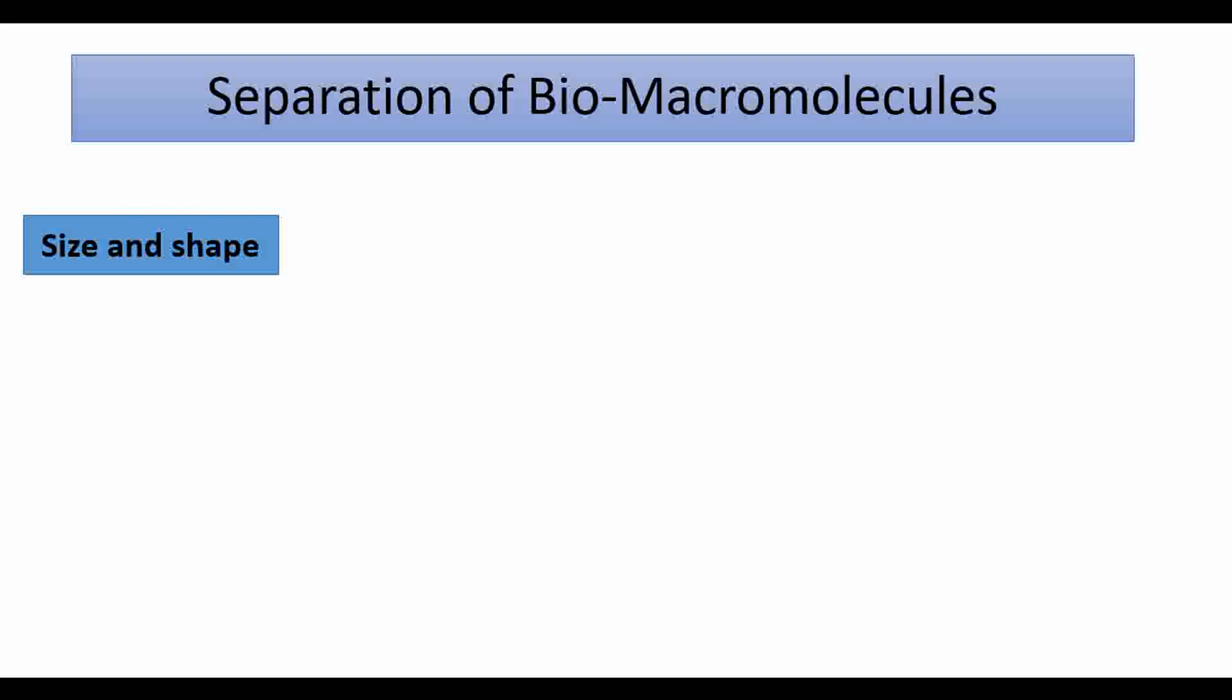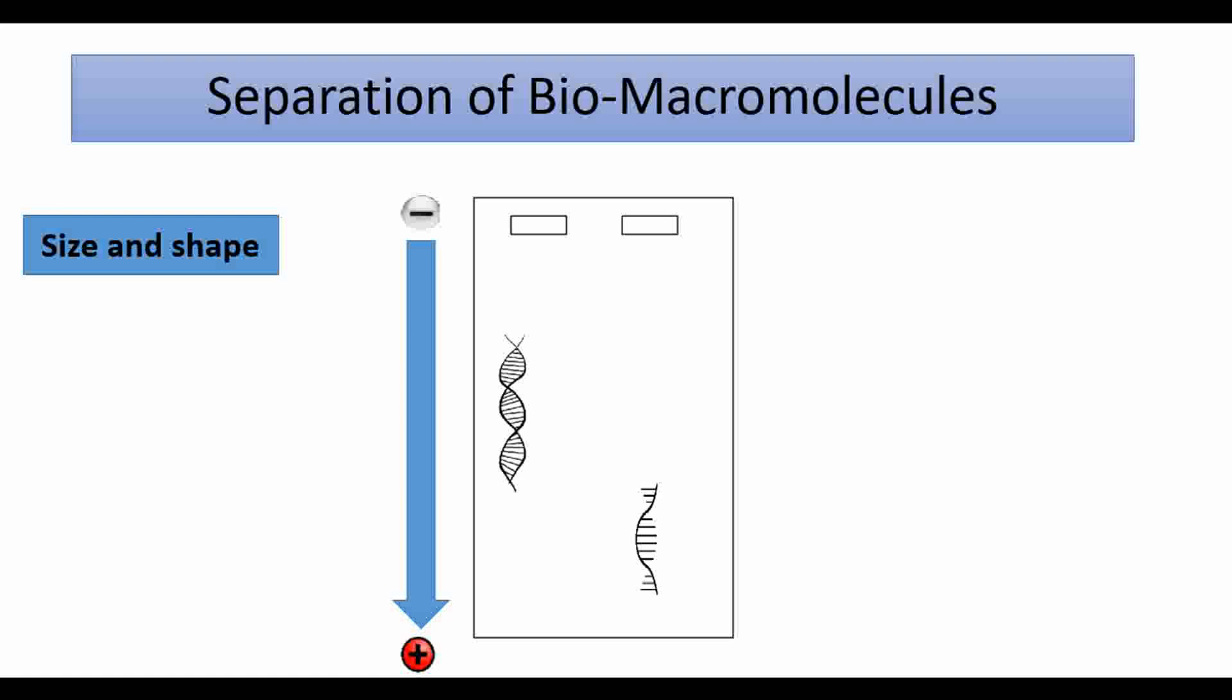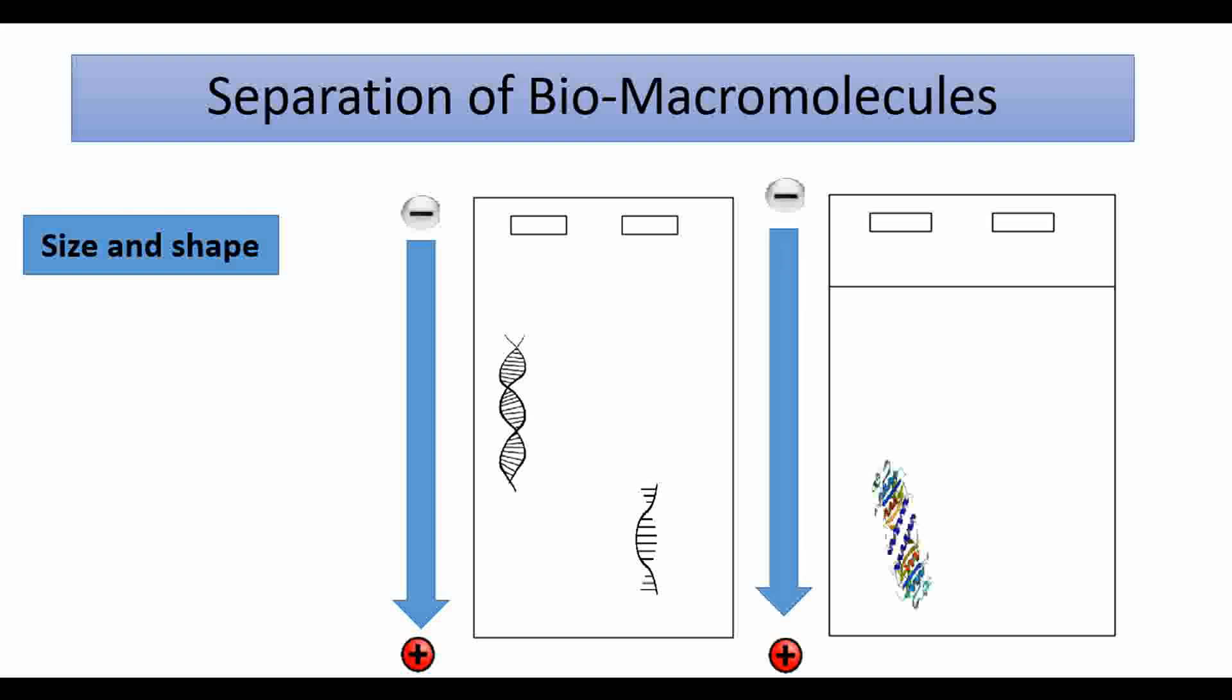Shape also plays a critical role in gel electrophoresis. For example, DNA is slower than RNA because RNA is single stranded, so it's easier to penetrate through the gel. Shape is also significant for proteins in electrophoresis. Fibrous proteins migrate faster than globular ones, which get entangled in the gel matrix.